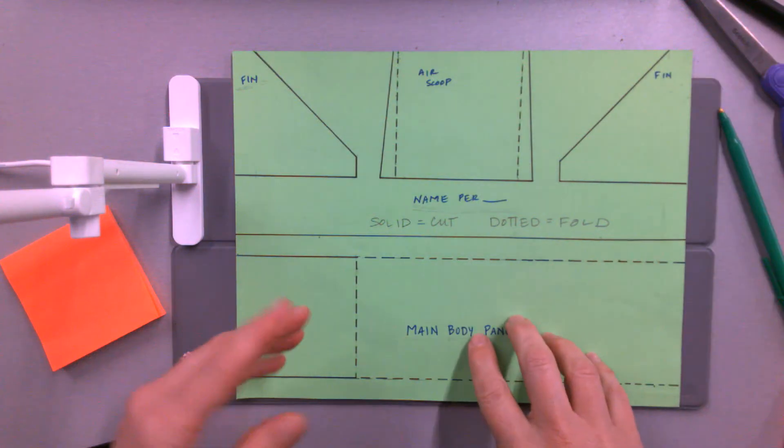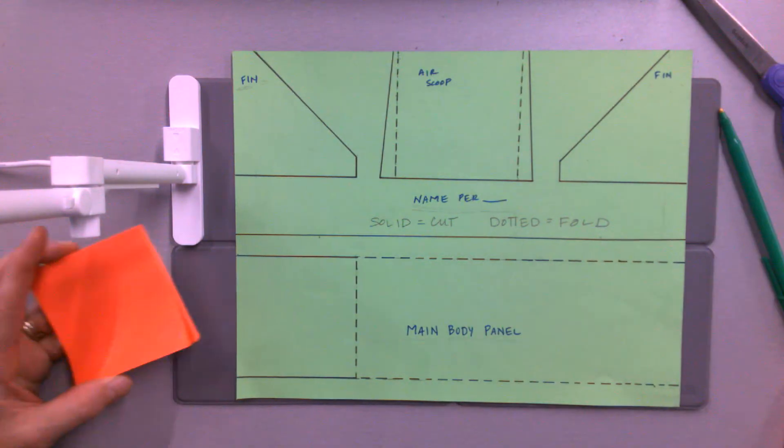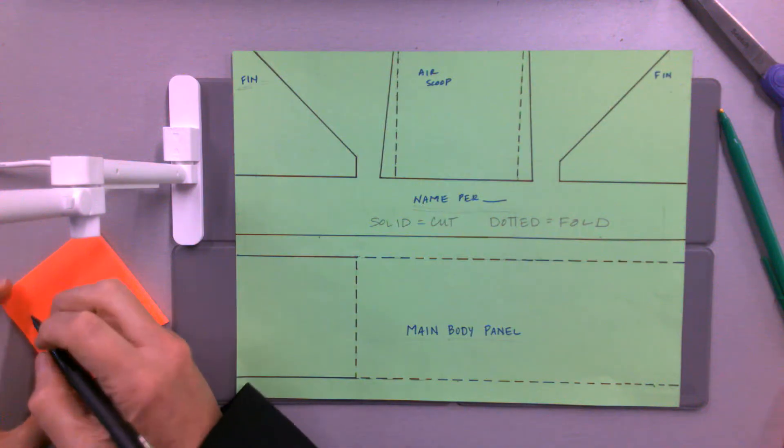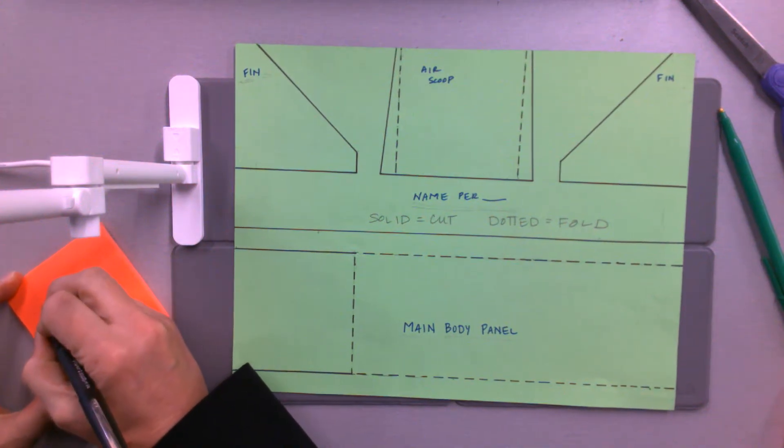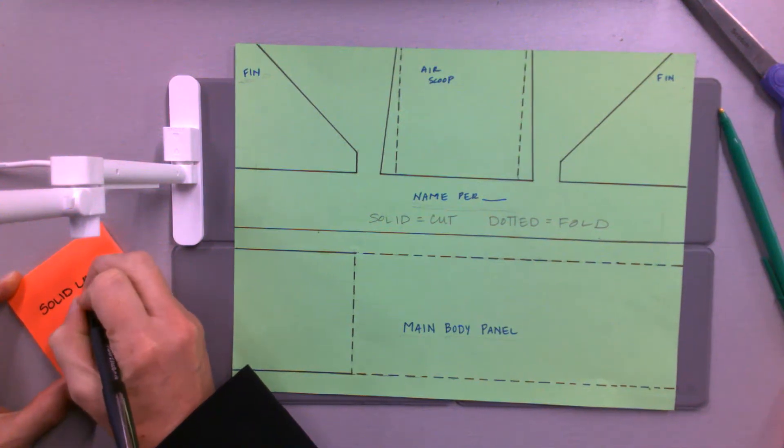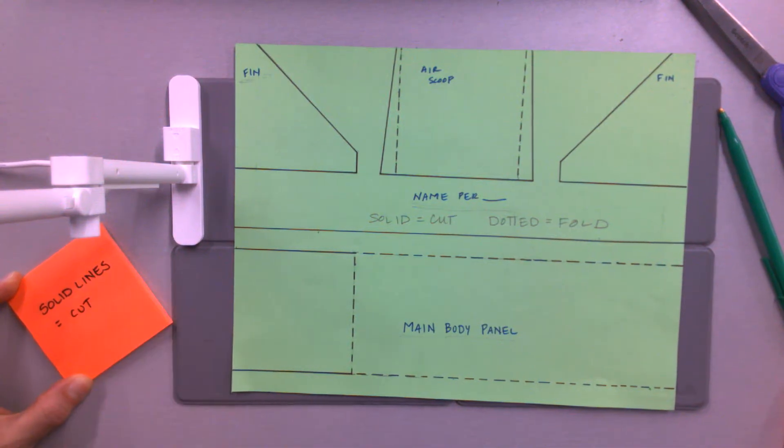The first thing you're going to do is note the dotted and solid lines on the paper. The solid lines are for cutting—you're going to cut along those lines.